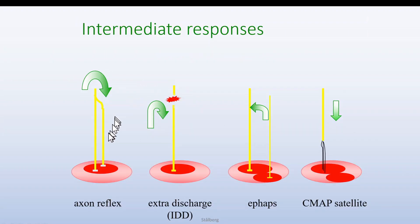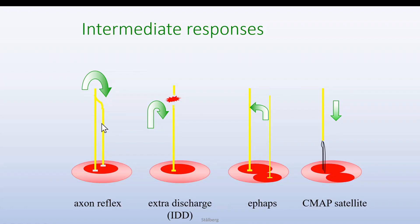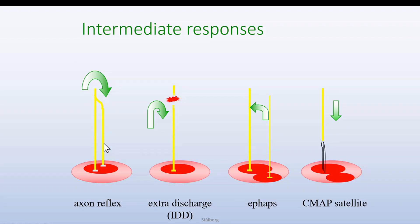A few words about A waves. They were initially named A waves because it was considered to be an axon reflex with the branching of a nerve that we stimulated here. We got the CMAP this way and we get the late component this way.